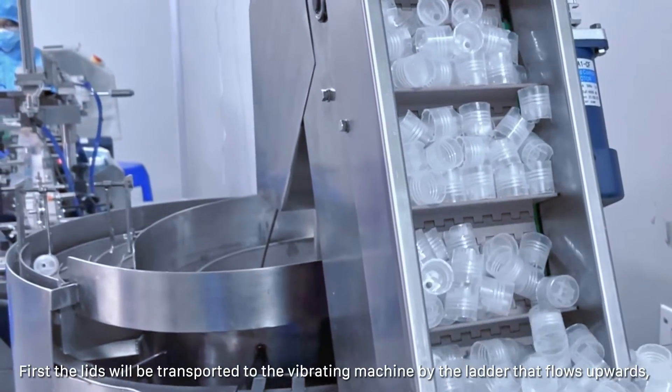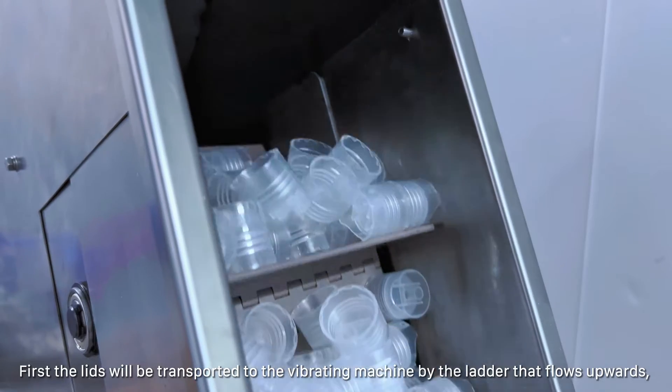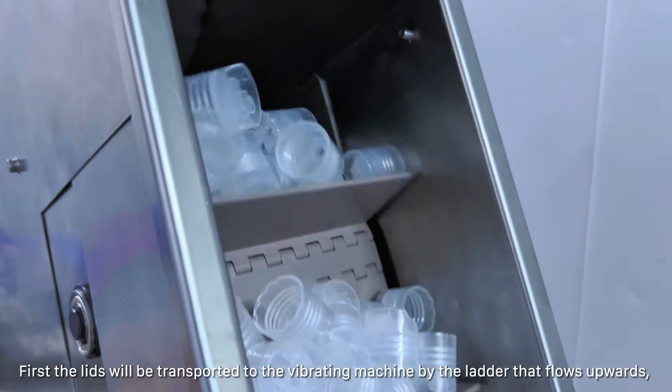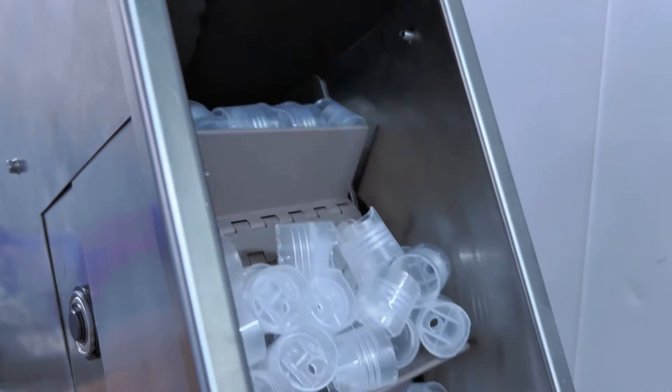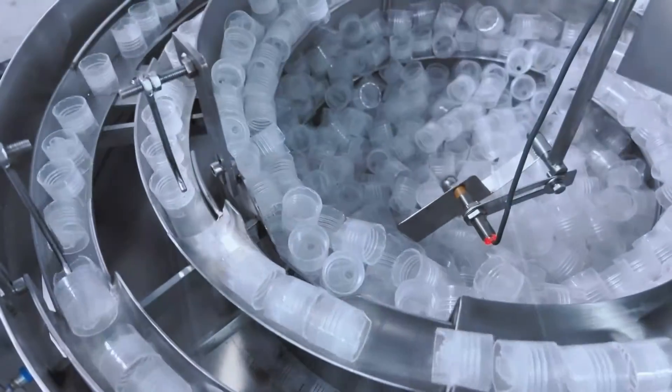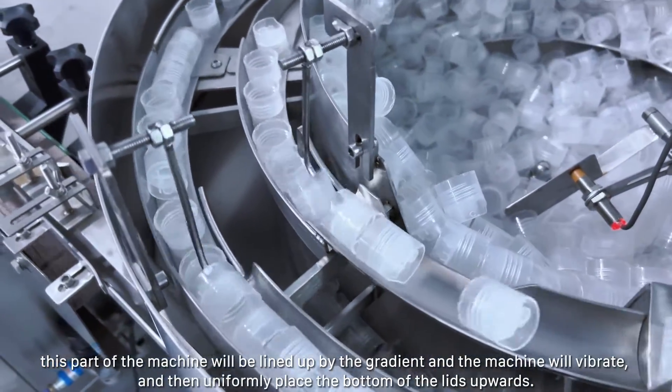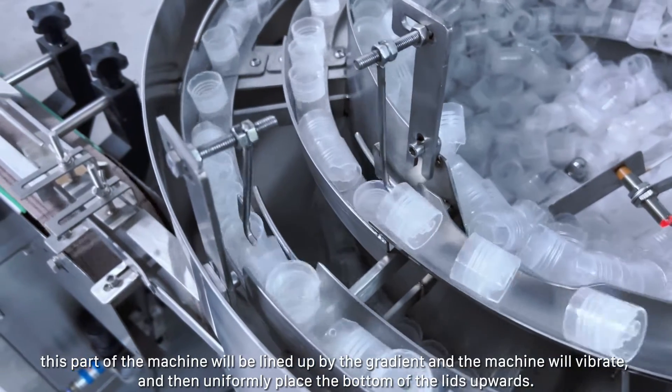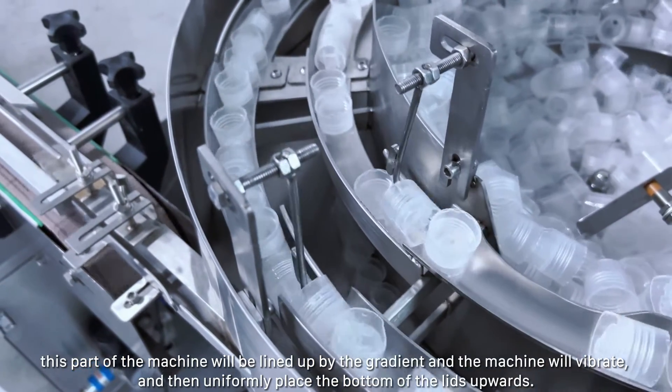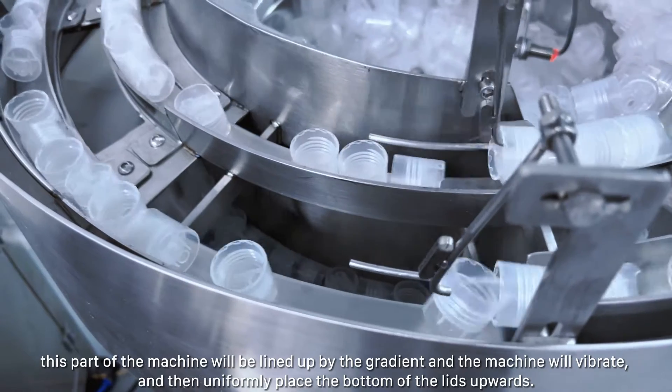First, the lids are transported to the vibrating machine by an upward-flowing ladder. This part of the machine will be lined up by the gradient, and the machine will vibrate, and then uniformly place the bottom of the lids upward.